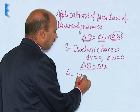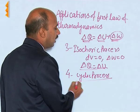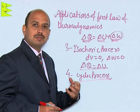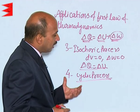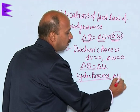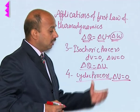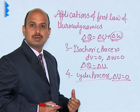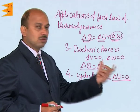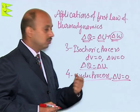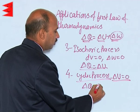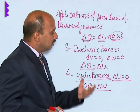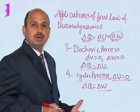The fourth one is the cyclic process. In a cyclic process, there are many changes in the system, but ultimately the system comes back and attains its original parameters. Since internal energy depends only on the initial and final state and is independent of the path, delta U is equal to 0 in the cyclic process — meaning the change in internal energy is 0. So we can write delta Q is equal to delta W: whatever heat is supplied equals the work done in this process.